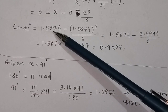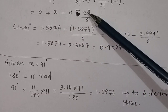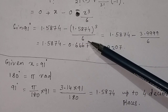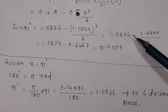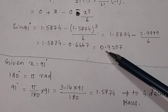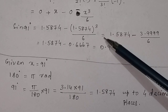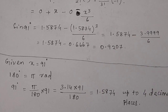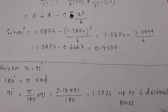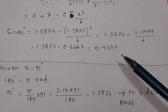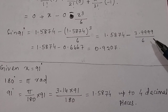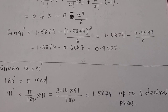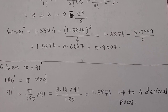Substituting x equal to 1.5874, we get 1.5874 minus (1.5874)³ divided by 6. Calculating this gives approximately 0.9207. If you include higher order terms, the value increases to approximately 0.9998, which is very close to 1.